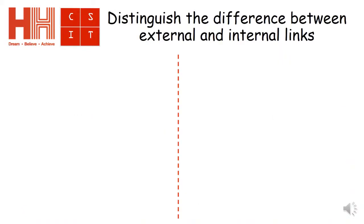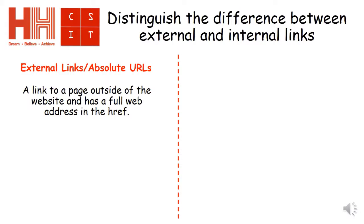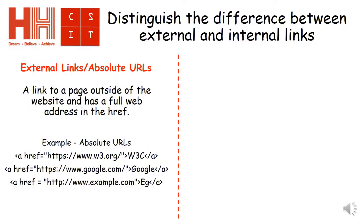We're now going to distinguish the difference between external and internal links. Starting with external links, the official name being Absolute URLs. These are links to a page outside of the original website, and will contain a full web address in the href. Some examples are now shown, and you can see that each of them has a full web address included after the href and before the link text.